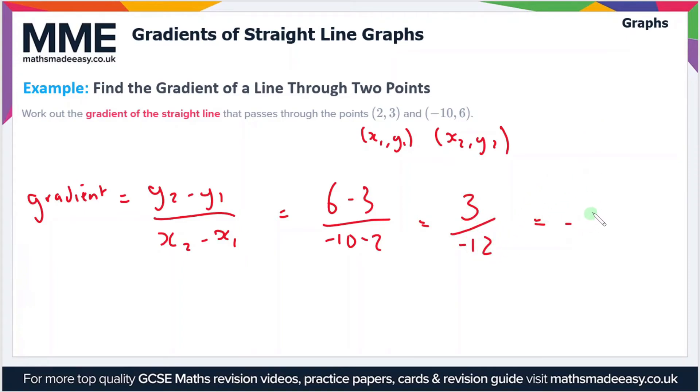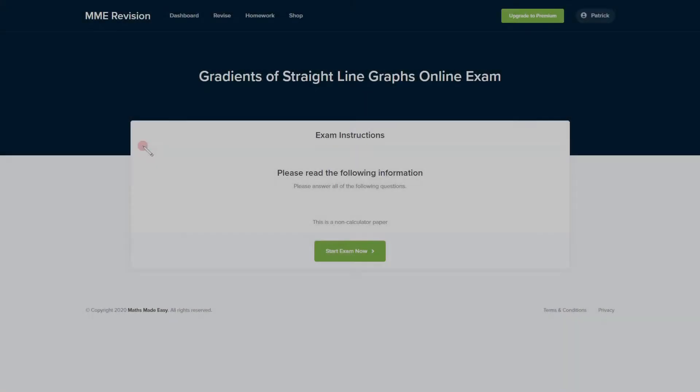Which you can rewrite as minus a quarter, so the gradient is minus a quarter.